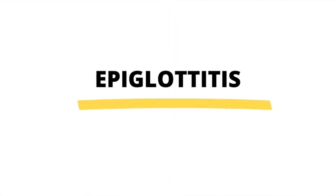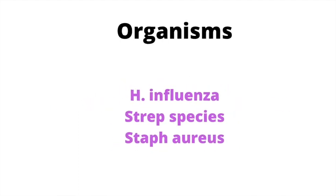Epiglottitis commonly affects patients up to the age of 7 years old in the pediatric population. However, it's not confined to the pediatric population because adults can also be affected. The organisms involved in epiglottitis include H. flu, the strep species, and Staph aureus. In unvaccinated people, the most common cause is H. flu. That's why the number one way to prevent epiglottitis is, of course, with the Hib vaccine.